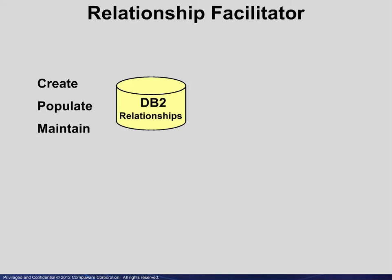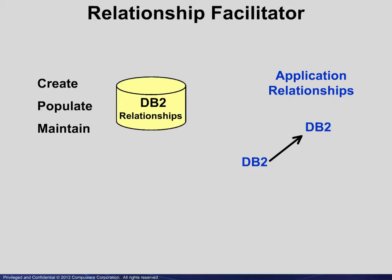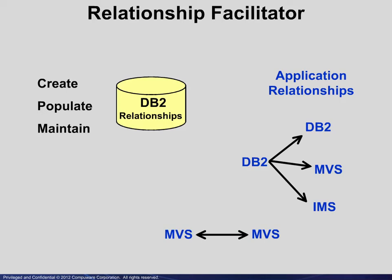The Relationship Facilitator is a utility which is used to create, populate, and maintain a dataset containing information about DB2 table relationships. Application relationships may be defined between DB2 tables, between a DB2 table and an MVS object such as a VSAM file, and between a DB2 table and an IMS database. Relationships between MVS files also may be defined. The focus here will be on DB2 tables.